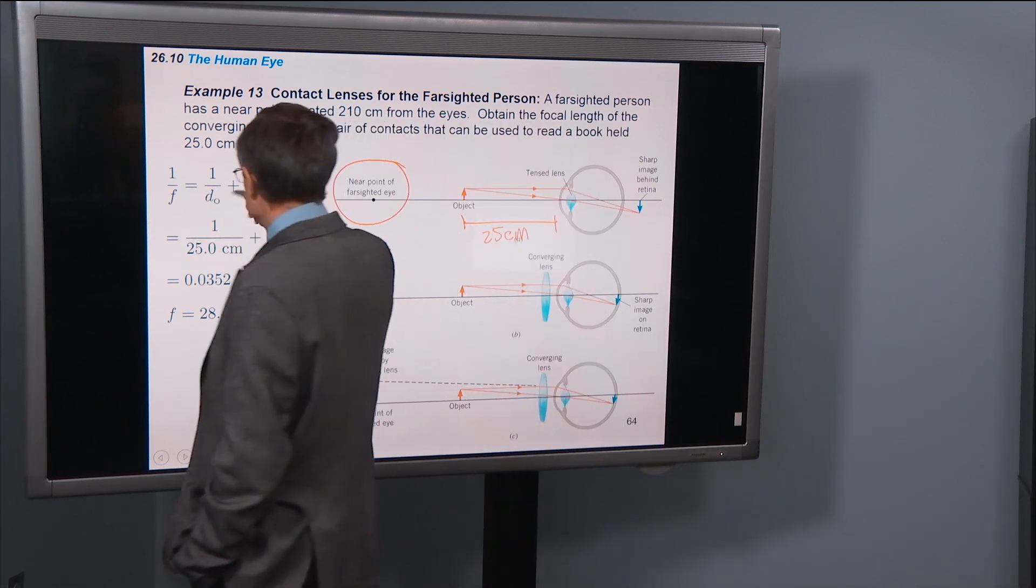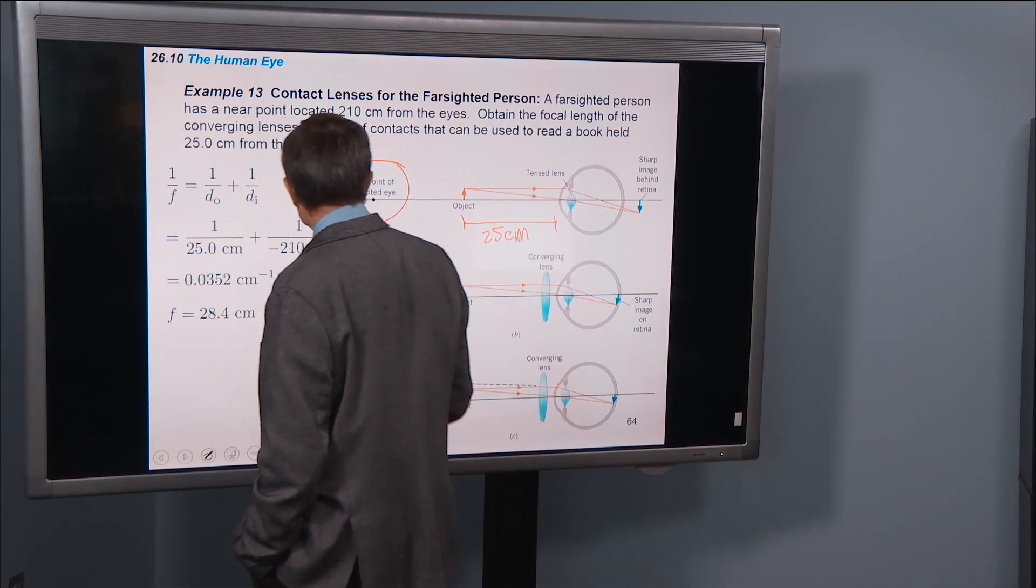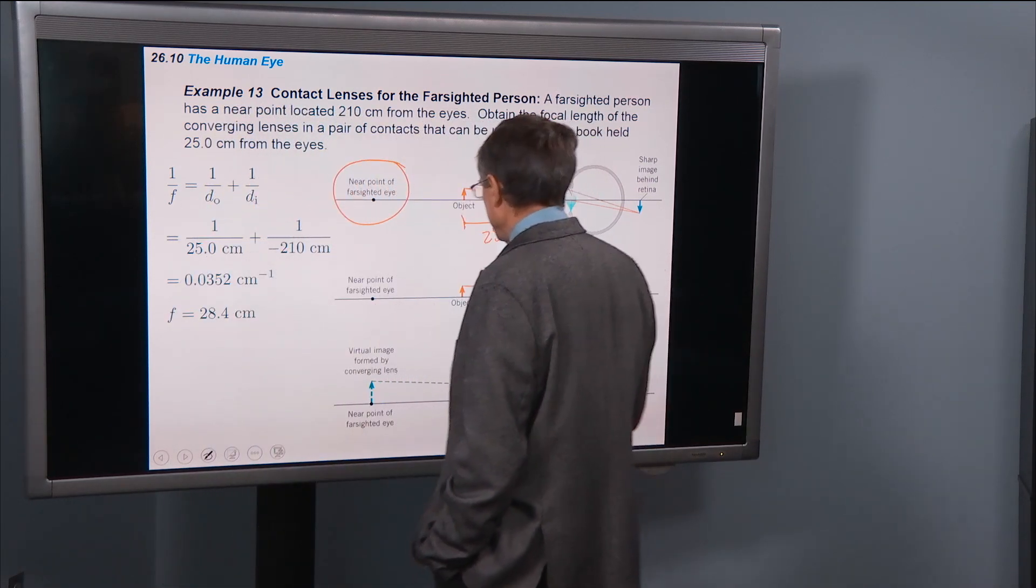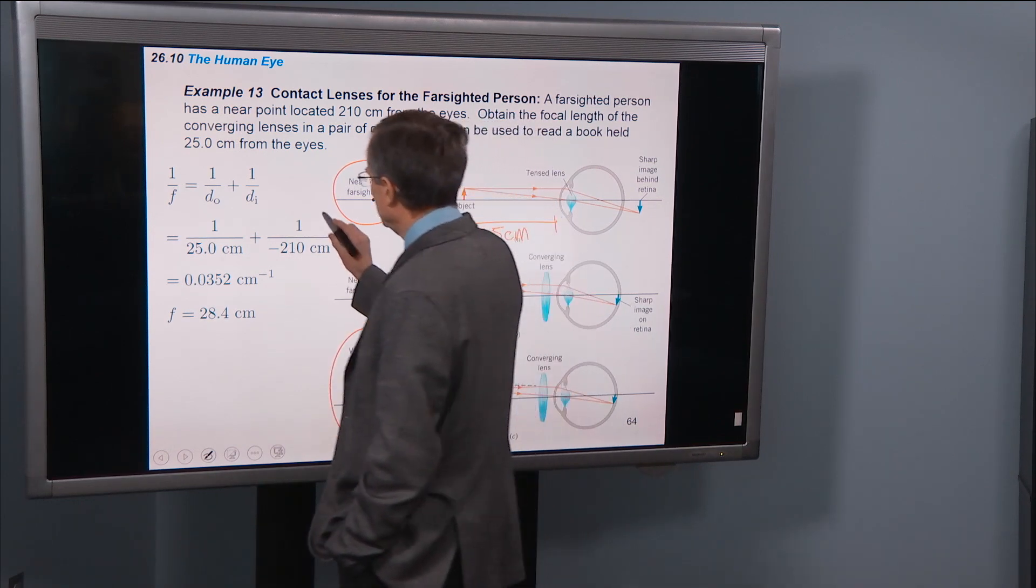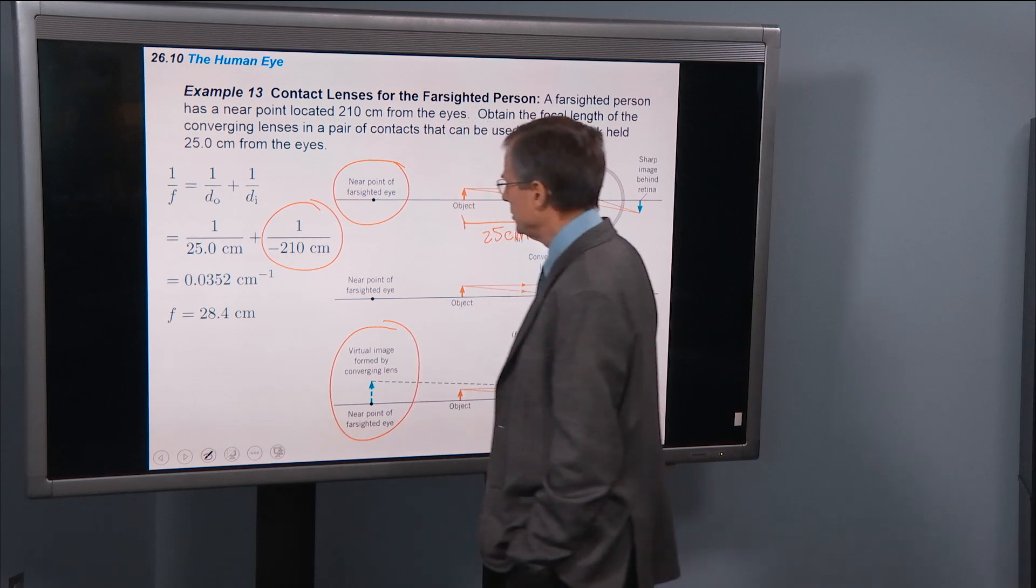Same deal, 1 over f is 1 over d0 plus 1 over dI. And the virtual image formed by the converging lens, that's going to be virtual. So it's going to be at minus 210 centimeters.